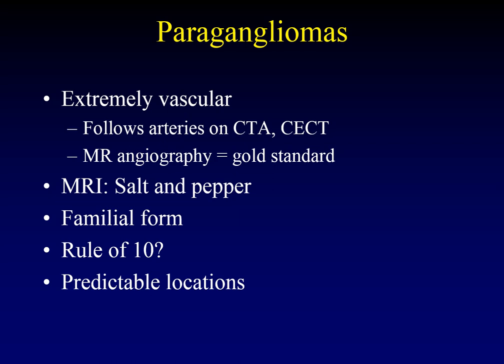There is a classic description of paragangliomas on MRI as looking like salt and pepper. The pepper is supposed to be flow voids in the internal vessels, and the salt is supposed to be increased T1 signal within thrombosed vessels. That is the answer on the test — if anyone asks what a paraganglioma looks like on MRI, the multiple choice answer is salt and pepper.